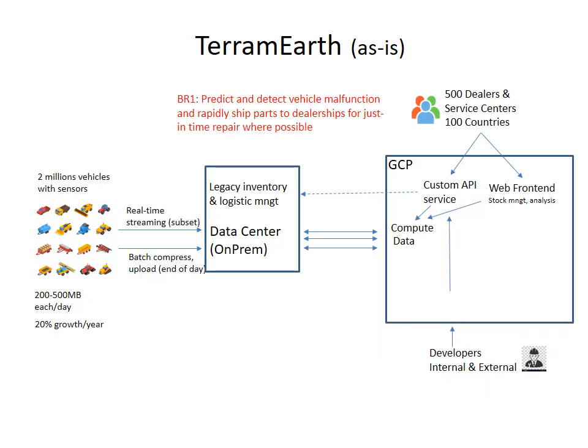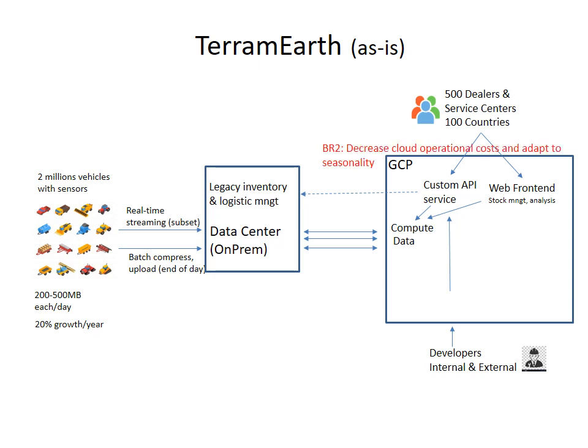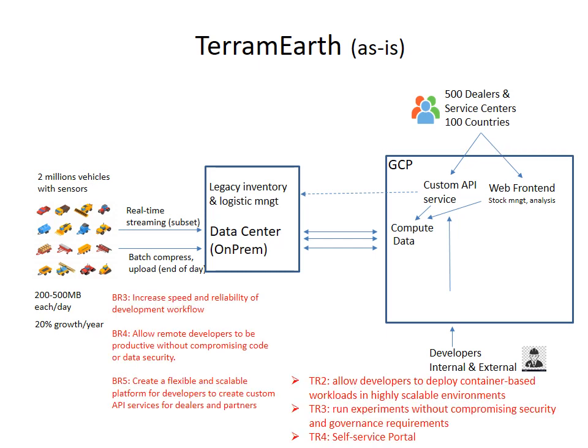Let's now review how the requirements associate with this diagram. Business requirement number one: predict and detect vehicle malfunction and rapidly send data to the vehicle quickly to GCP, as well as how efficiently the analytics tools support dealers in finding information. Business requirement number two is to decrease cloud operational costs, which I will present in the next slide.